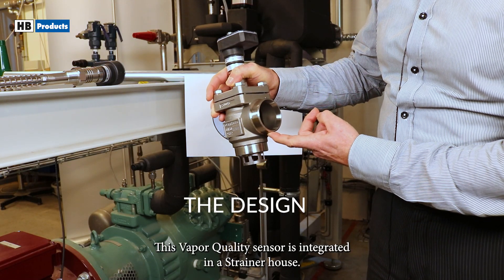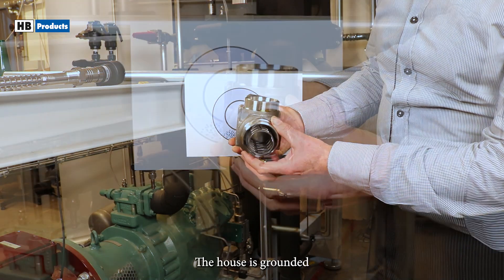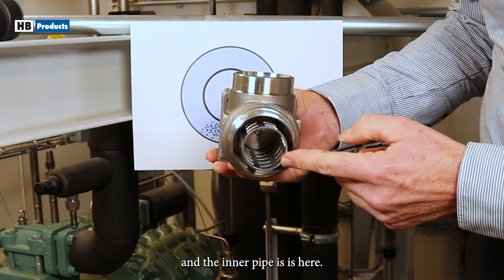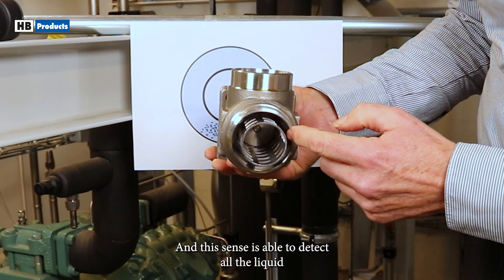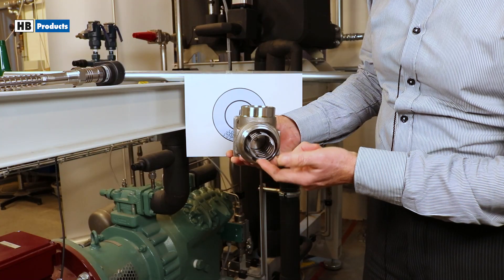This Waveful Quality sensor is integrated in a strainer house. The house is grounded and the inner pipe is here, and this sensor is able to detect all the liquid flowing between the two parts here.